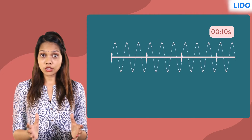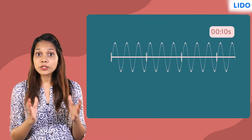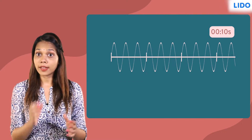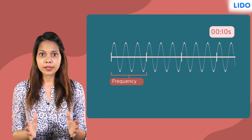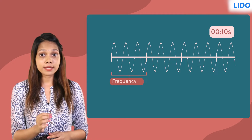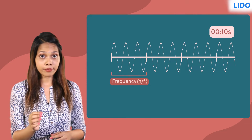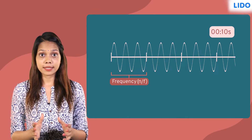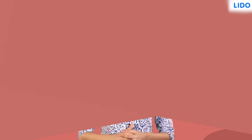The number of vibrations created by the source of the sound wave in one second is known as its frequency. It is denoted by N or F, and the unit of frequency is Hertz. The frequency helps us describe the pitch of a sound.